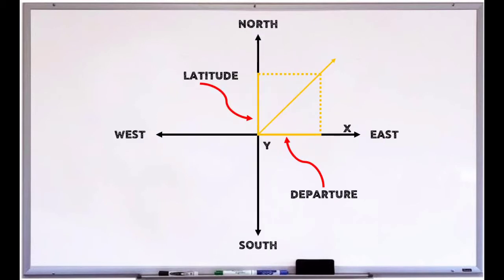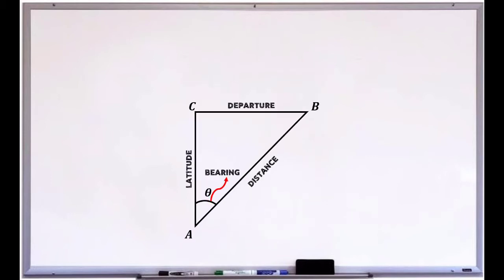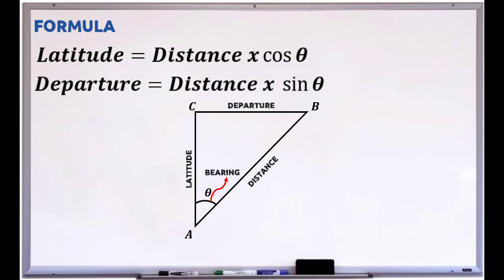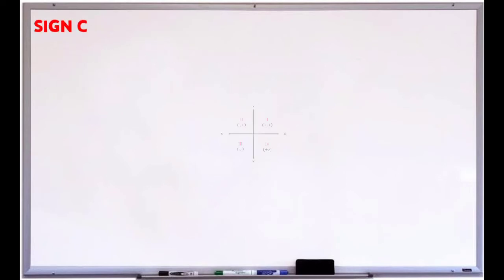To understand these concepts, let's base them on the x and y components. The y component represents the latitude, while the x component represents the departure. In the shown figure, line AB has its latitude AC and departure BC. The angle theta is the bearing of line AB. The formula for latitude equals distance times cosine theta, and departure equals distance times sine theta.